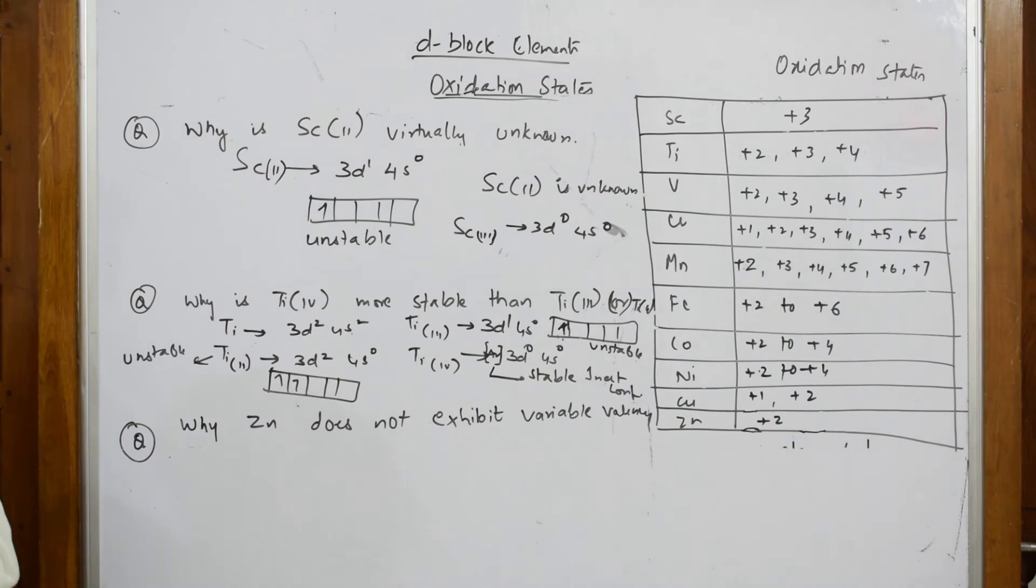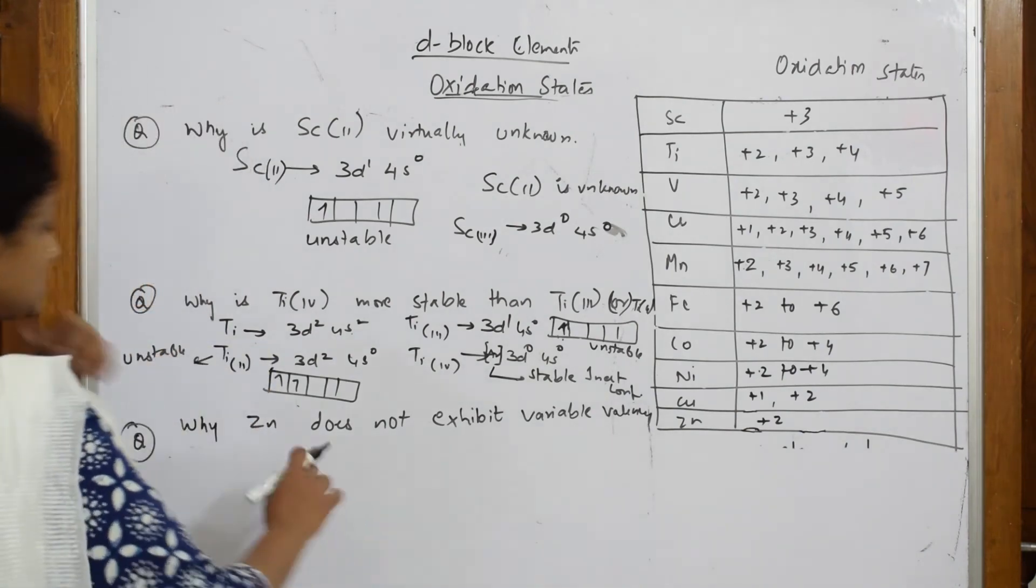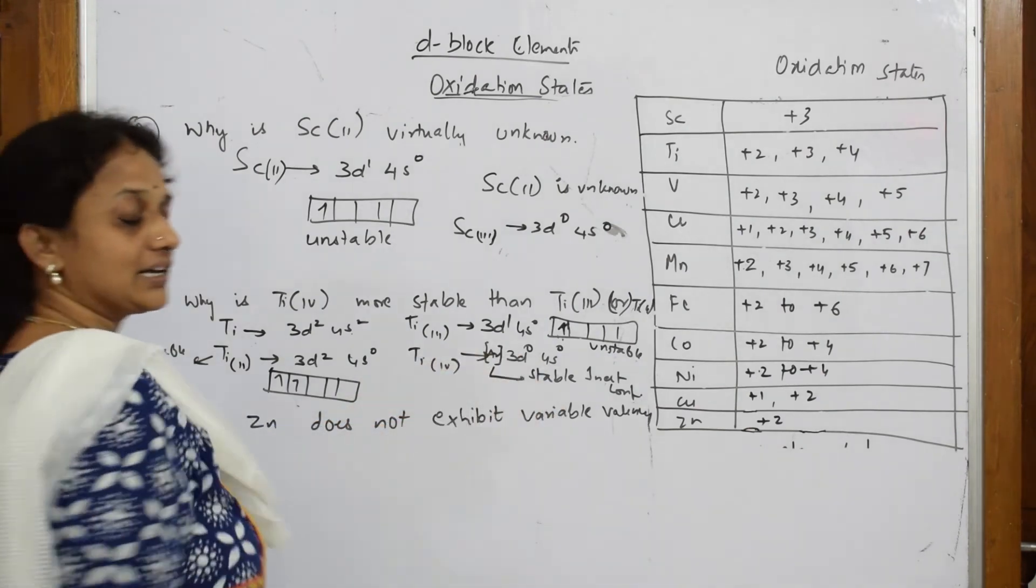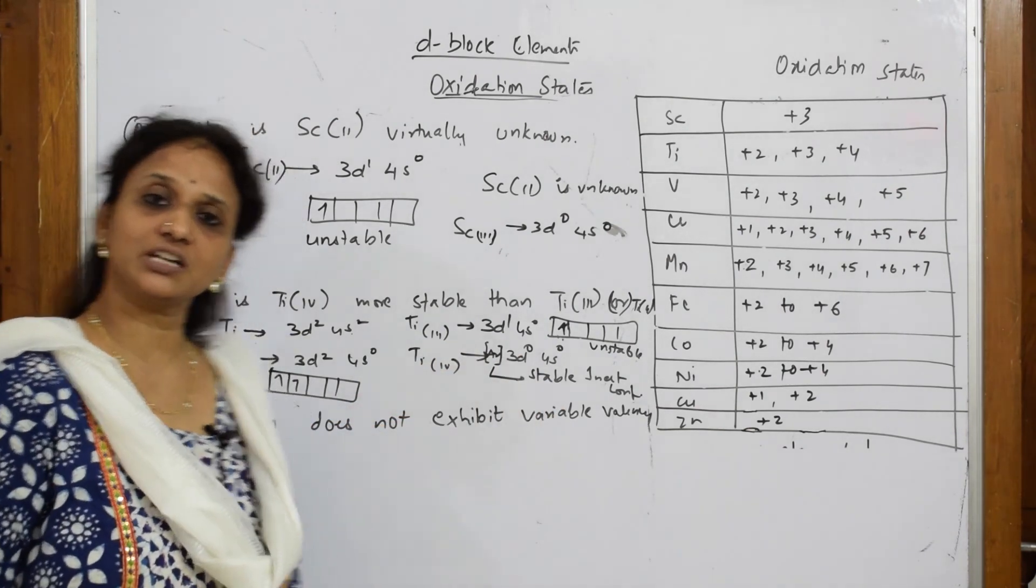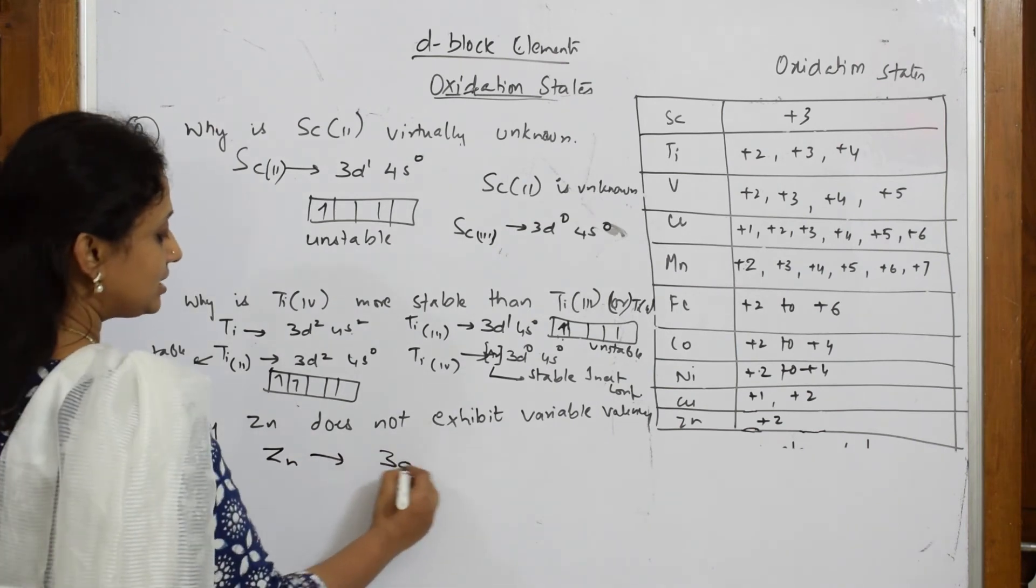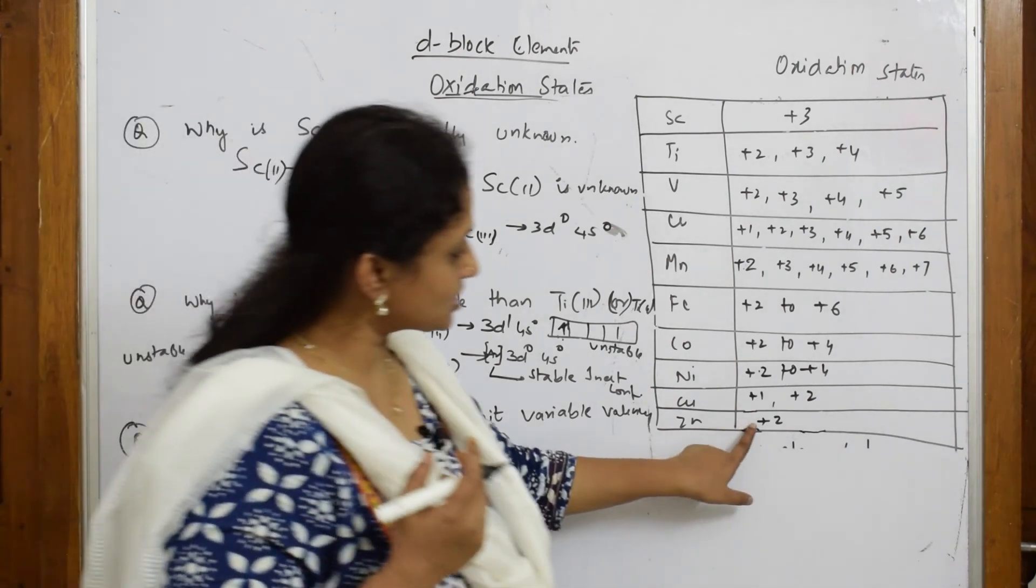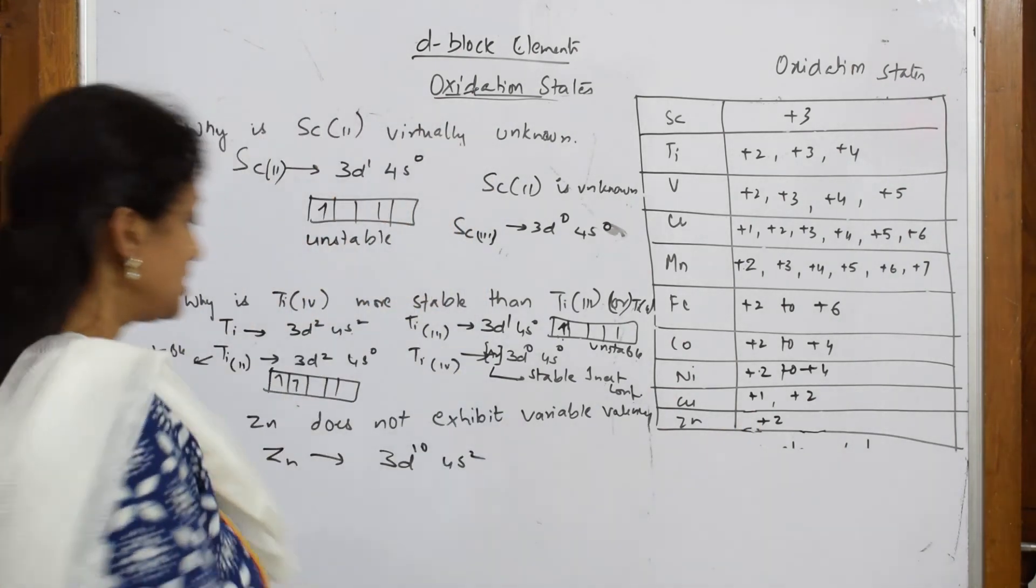Now let's see why zinc does not exhibit variable valency. Zinc does not exhibit variable valency means again they're asking us to relate with electronic configuration. When I have to take zinc, it comes under 3d series: 3d10 4s2. It can exhibit only +2 oxidation state.